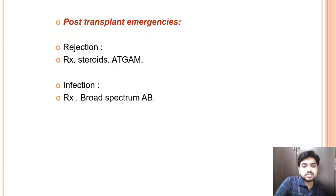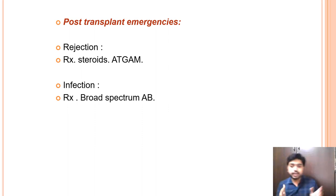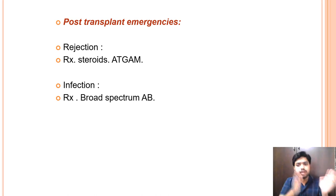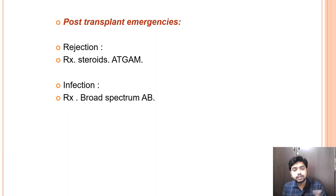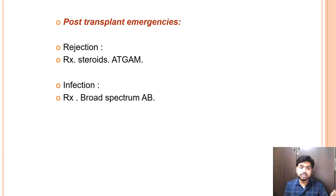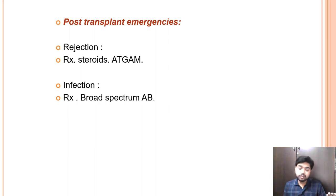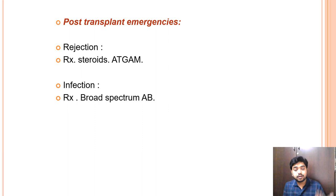Moving to post-transplant emergencies: the most common is acute rejection, recognized by heart failure signs, decreased ejection fraction, ECG changes such as ST elevations, elevated cardiac enzymes, high anti-proBNP, and high inflammatory markers. Treatment is with steroids or antithymocyte gamma globulins. The next most common issue is infection, since post-transplant patients are immunosuppressed and at high risk, requiring broad-spectrum antibiotics.